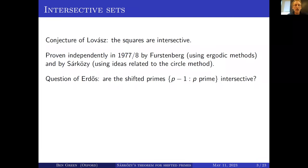Erdős asked around the same time a related question: are the shifted primes p minus 1, as p ranges over primes, intersective? The primes themselves are not intersective — for example, you could take the set of multiples of four, which certainly has positive upper density, but no two elements of that set will differ by a prime for fairly obvious reasons.